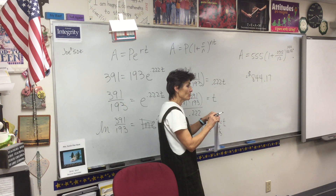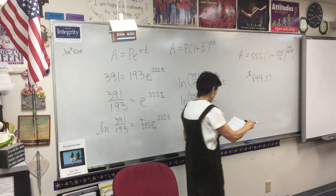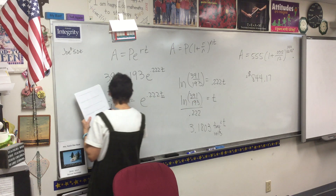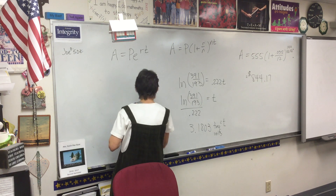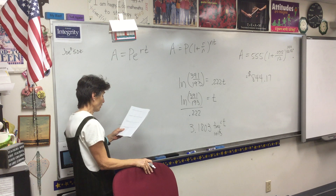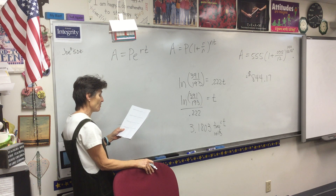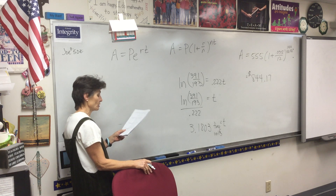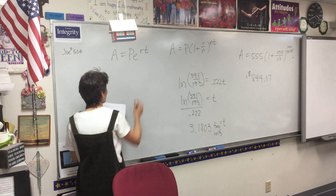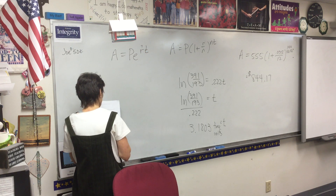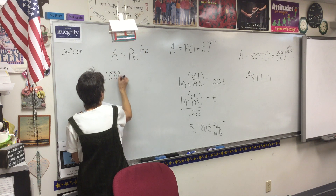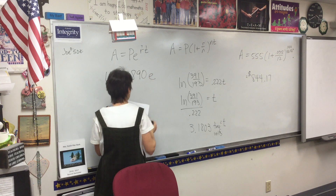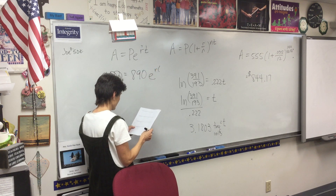Last problem on this entire note sheet. What interest rate compounded continuously will be required to end up with $1,000 after three years if $890 is initially deposited? You're solving for R. What's my formula? A equals $1,000, P equals $890, R is unknown, and T is three years.